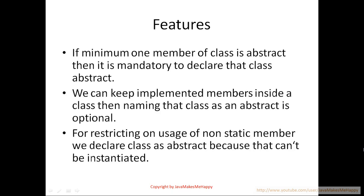If even one member of a class is abstract, then it is mandatory to declare that class as abstract. Suppose you have declared a public class A and defined one variable or method as abstract — that class will fall into the trap of abstraction. The class must be named and declared as abstract. If you declare a member as abstract but do not declare the class as abstract, you will get a compile-time error. If you are using the abstract keyword, you must define your class as abstract — this is pretty important.